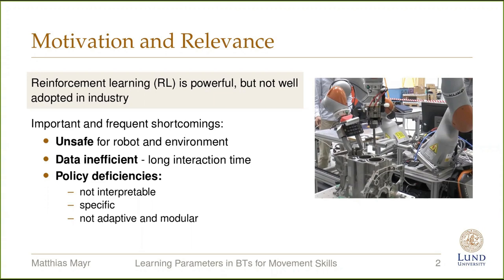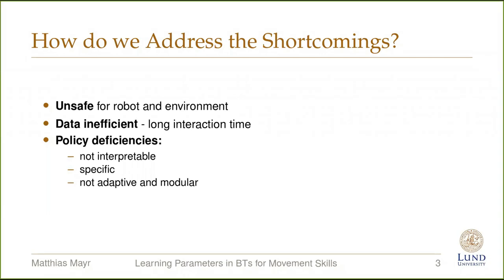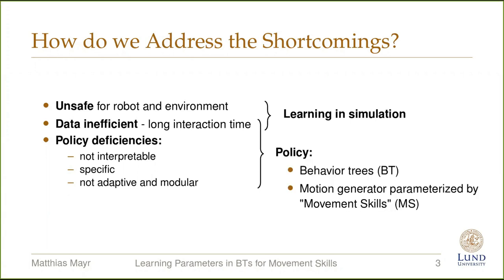How do we address these shortcomings? Dangerous behaviors are avoided by learning in simulation. This also tackles data efficiency, since it does not block the real system during that phase. The main aspect is our policy formulation, consisting of behavior trees for task and behavior switching, in combination with a motion generator operating in robot end-effector space that is parameterized by movement skills. We optimize policy parameters with a black-box optimization algorithm and utilize domain randomization to overcome the sim-to-real gap and to ensure robust execution.